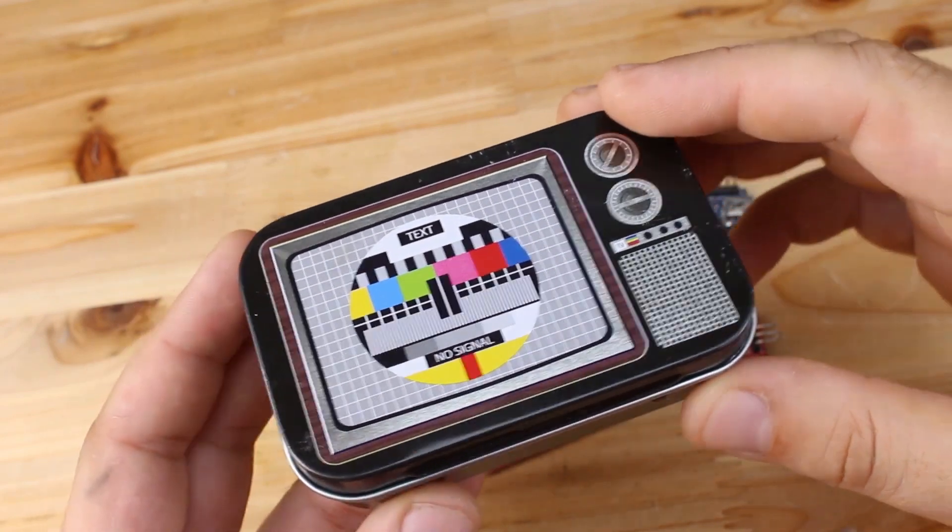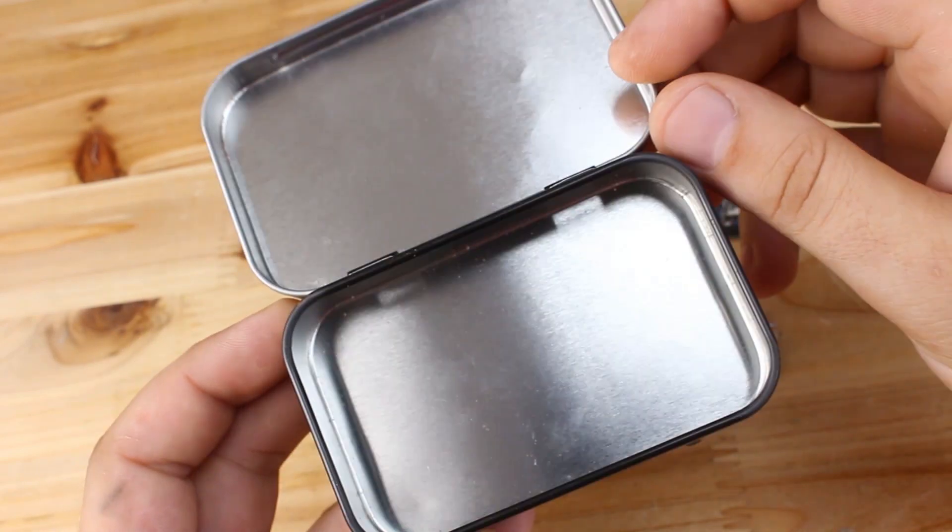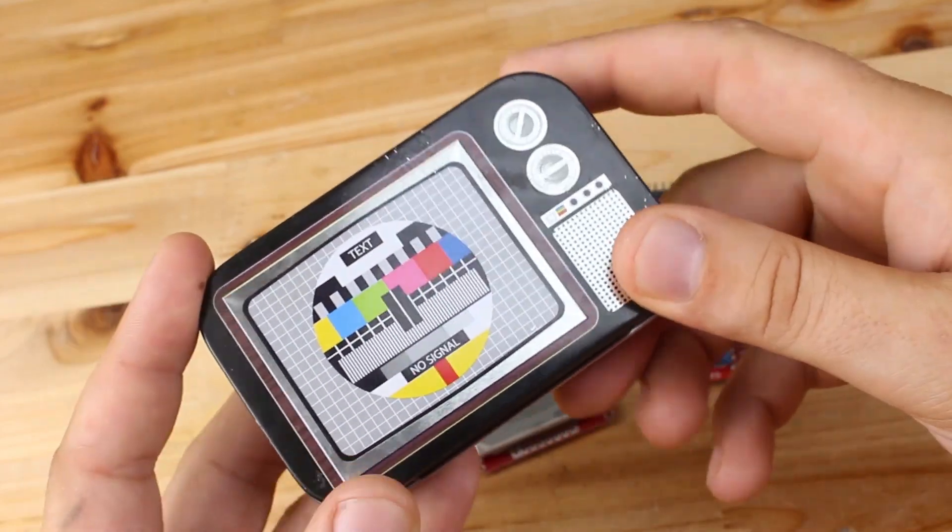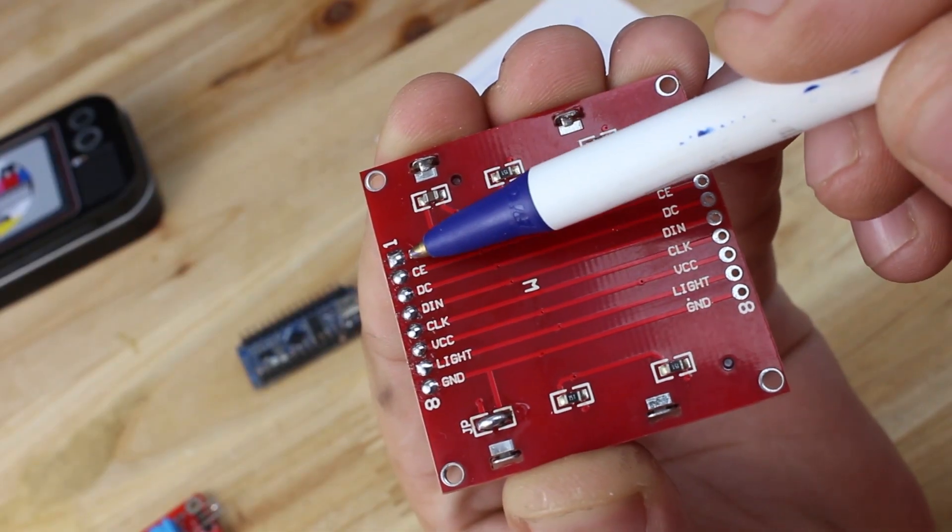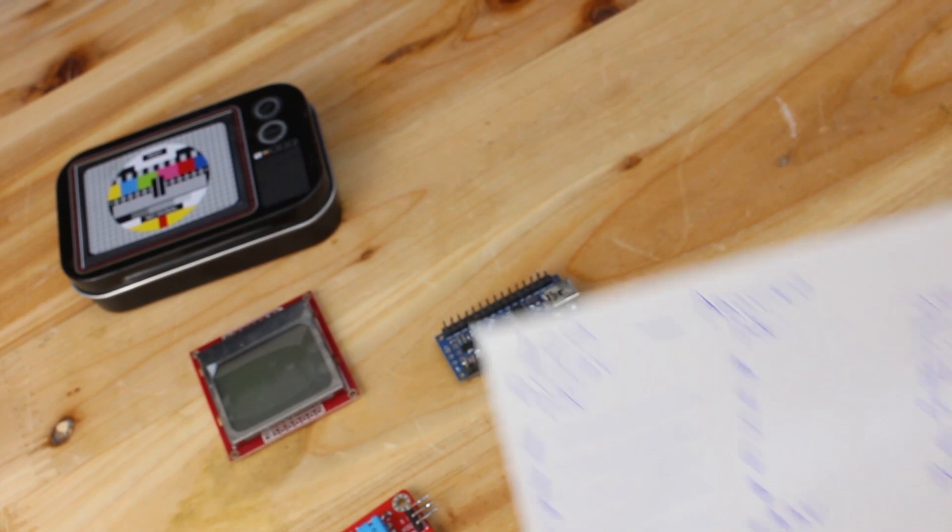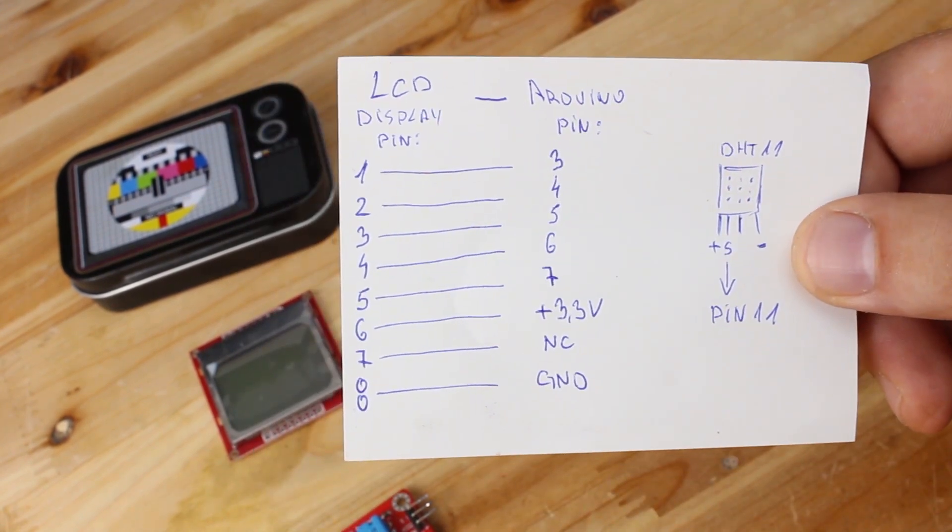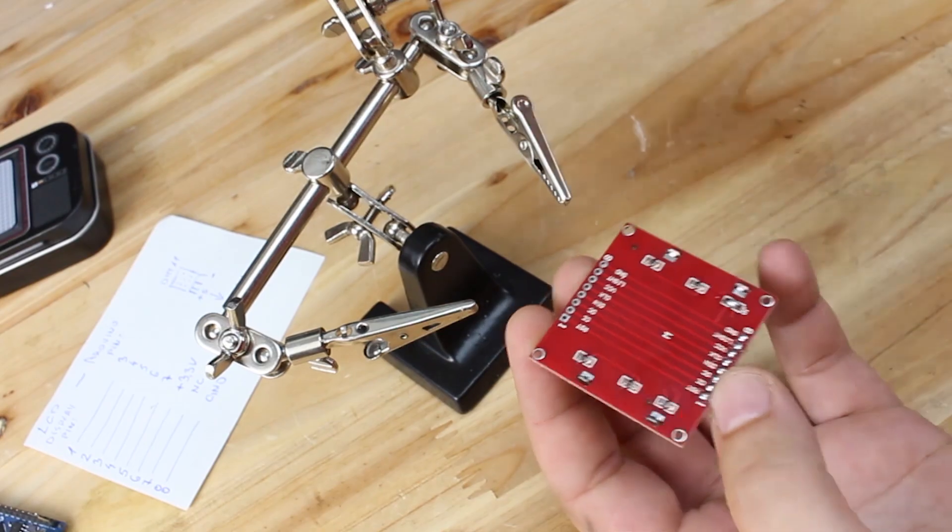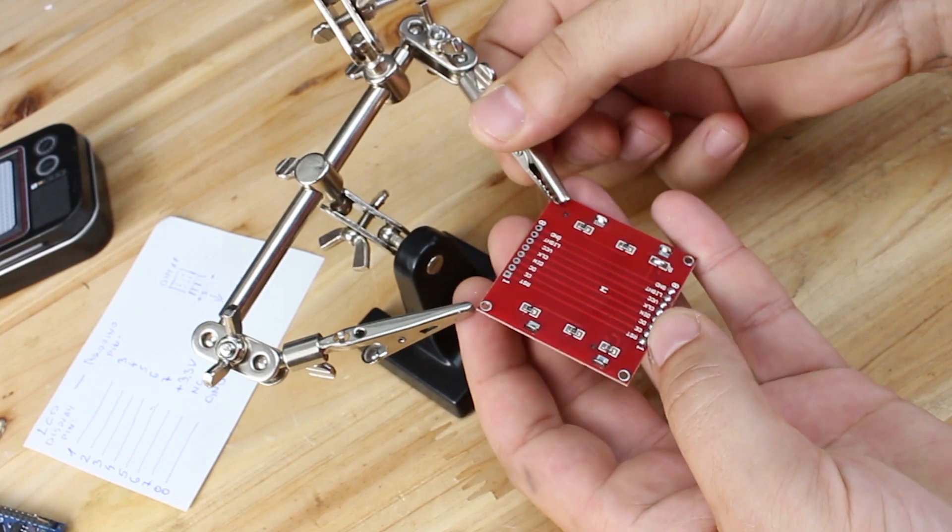I got this cute metal box to put everything inside. First we're going to connect the LCD display with Arduino board based on this diagram that I'm showing right now. Seven wires are needed to be soldered between LCD and Arduino board.